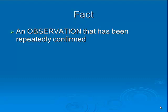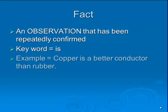A fact is any observation that has been repeatedly confirmed. A fact will contain the key word 'is', and a good example of a fact is that copper is a better conductor than rubber. You see that word 'is' in there, and that's normally something that everybody will agree on, and it's been repeated over and over again.